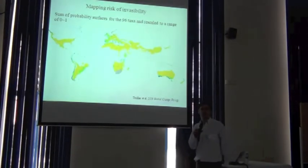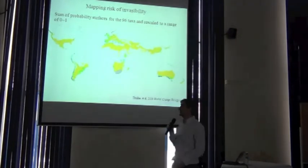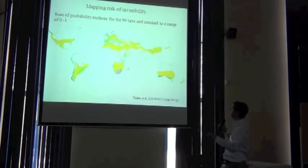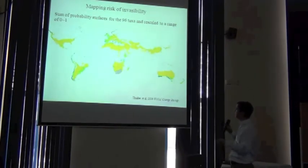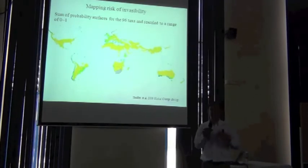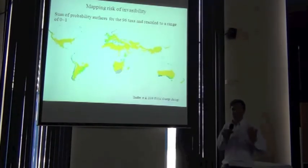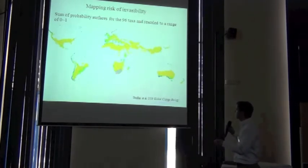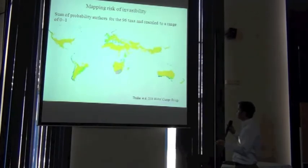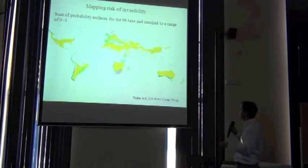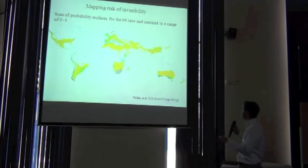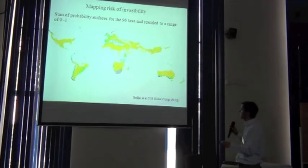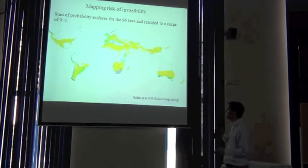Just to finish off, what did they do with that? They took across all 96 species and basically summed up those surfaces, rescaling them to between zero and one. What you're seeing is that final conclusion of invasive potential for South African endemic plants in other regions of the world - an amalgamation showing where the environment is similar to where the plants exist in South Africa. There are clear hotspots in South Australia, in California, parts of Europe, and down the coast of Western South America.